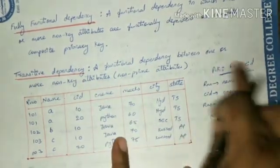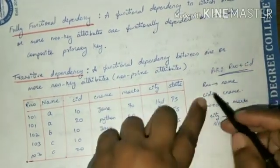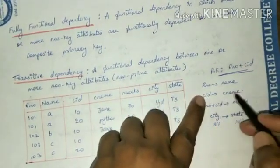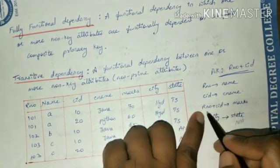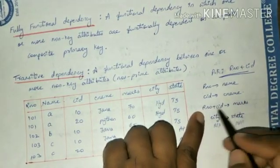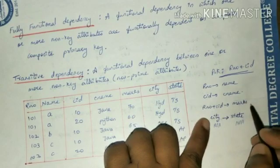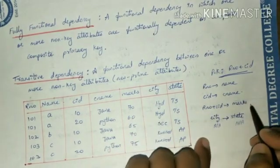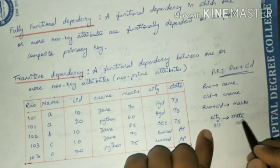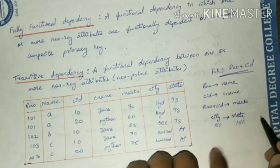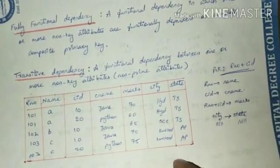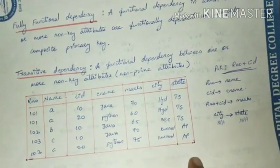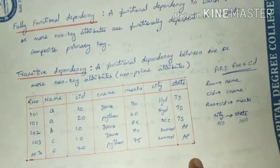So we have covered three types of dependencies. When a non-prime attribute depends on part of the primary key, that is partial functional dependency. When a non-prime attribute depends on the complete primary key, that is fully functional dependency. When one non-prime attribute determines another non-prime attribute, that is transitive dependency. Hope you have understood all the dependencies. Thank you all.